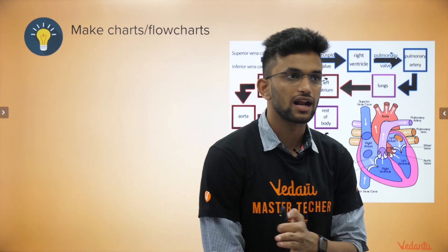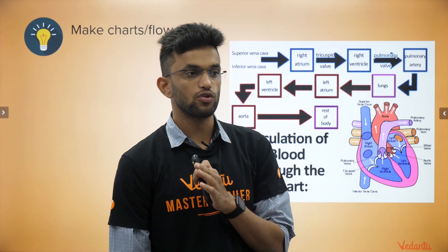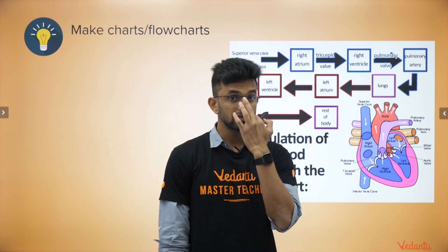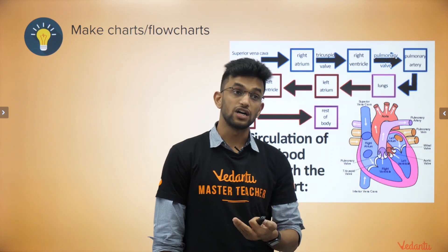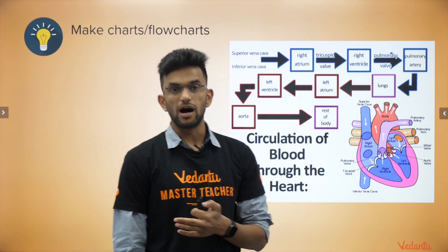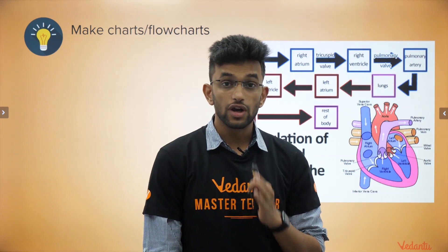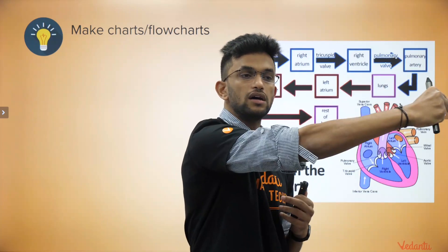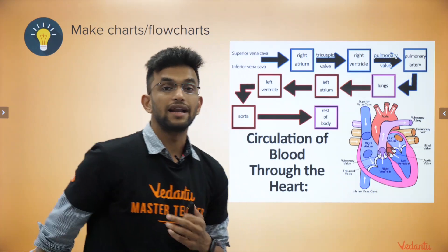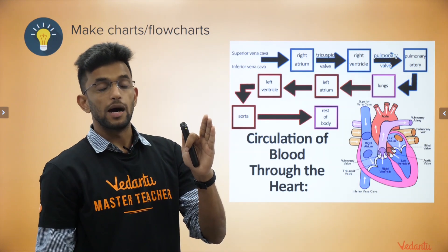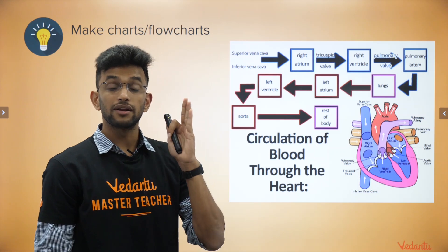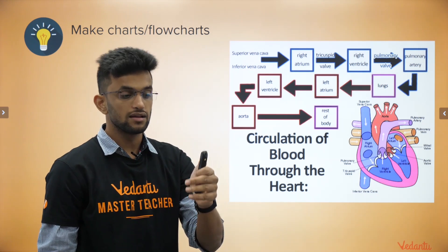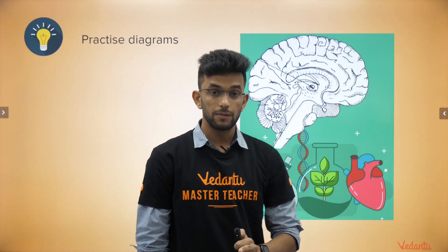Make flow charts or block diagrams, as I keep telling you. For example, when we were doing 'Our Environment', I showed how you can draw a block diagram for biomagnification: grass → grasshopper → frog → snake → eagle. So eagle will have the maximum amount of non-biodegradable chemical waste. Just like this, you can explain the biomagnification concept.